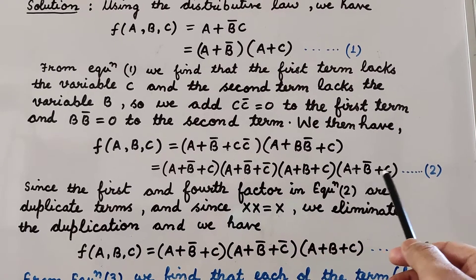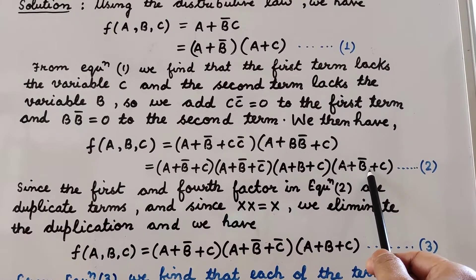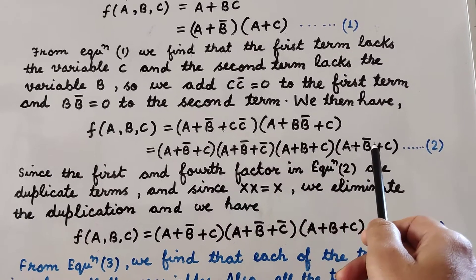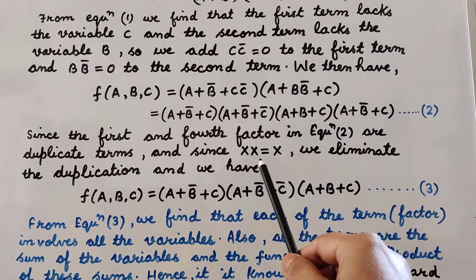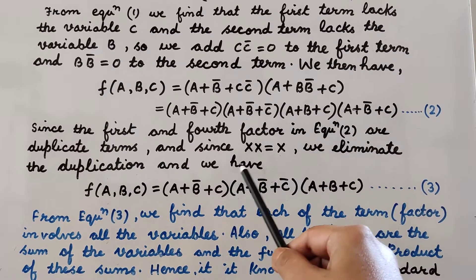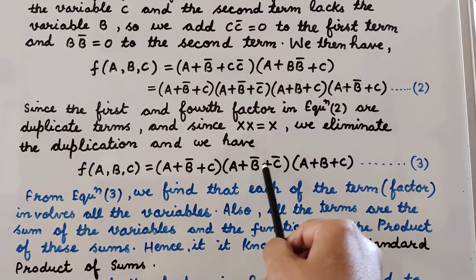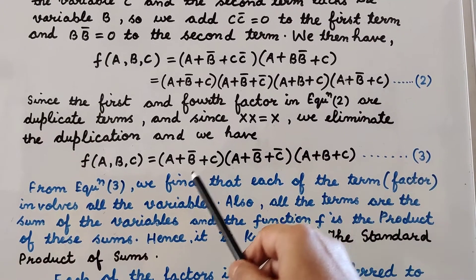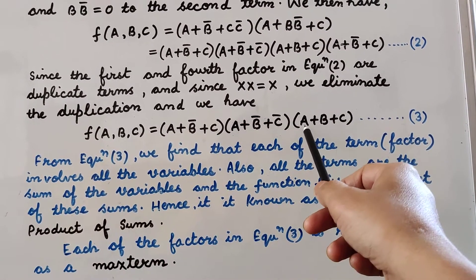From equation 2 we find that the first term and the fourth term are duplicate terms — both are (a + b' + c). From the rules of Boolean algebra, x · x = x, so if any term is repeated its value is the same. We eliminate the duplication, and the function becomes: f(a, b, c) = (a + b' + c)(a + b' + c')(a + b + c). This is equation 3.